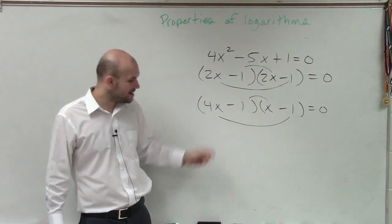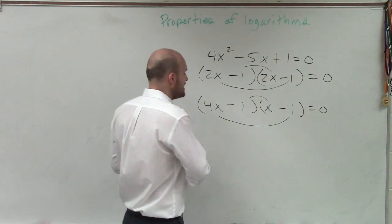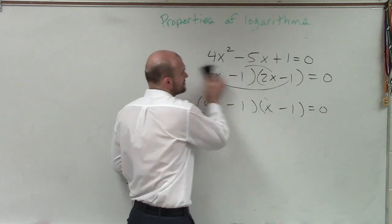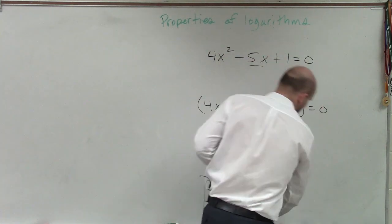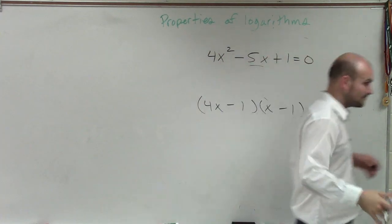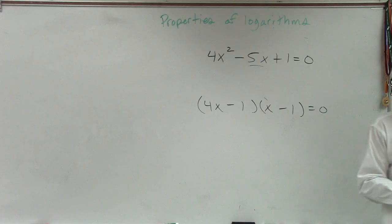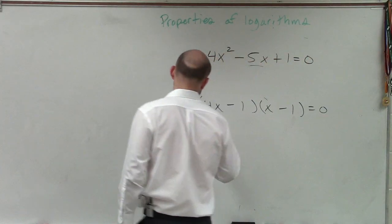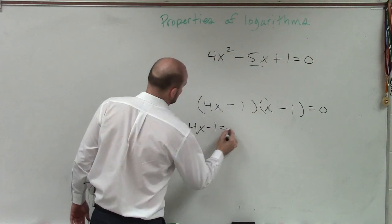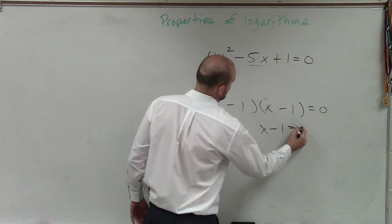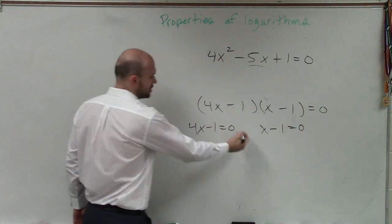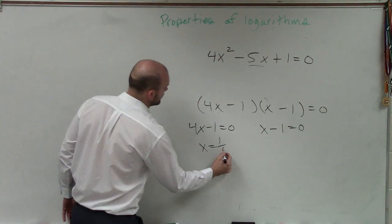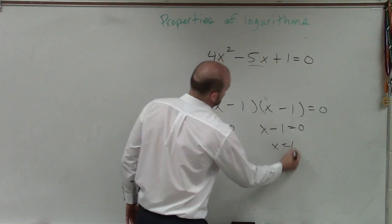That one — so therefore, that's my problem. But I'm not done yet. I factored it and it equals 0, but I'm not done. Now I need to apply the zero product property. So I say 4x minus 1 equals 0, and x minus 1 equals 0. Solving for x: x equals 1 fourth, and x equals 1.